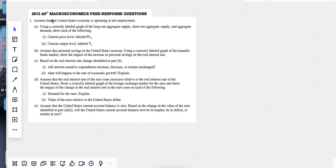2013 macro FRQ number one here. Somehow I've skipped doing this one. The economy is operating at full employment, long run supply, short run aggregate demand, PL1Y1. So let's just draw it here. Long run aggregate supply, short run aggregate supply. We're at equilibrium.